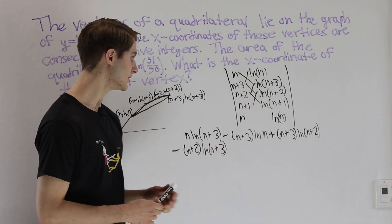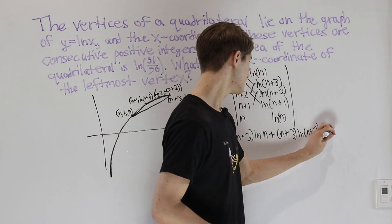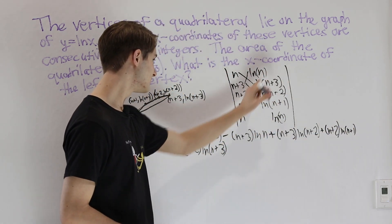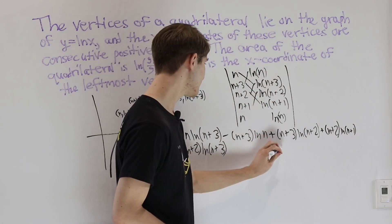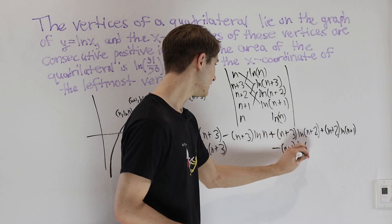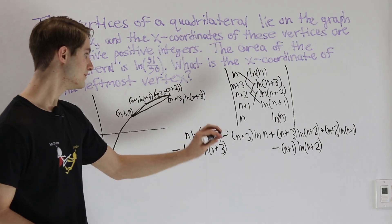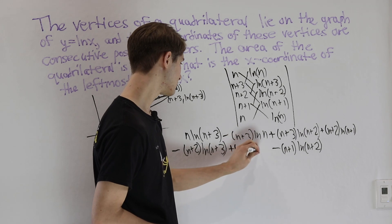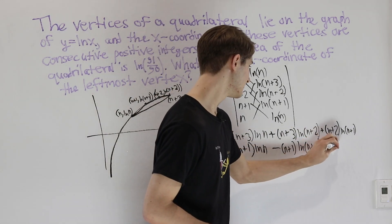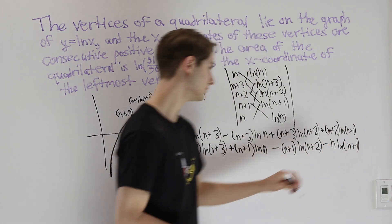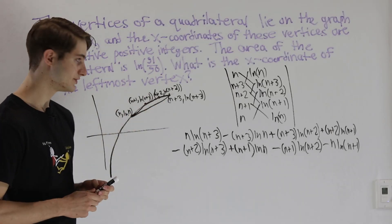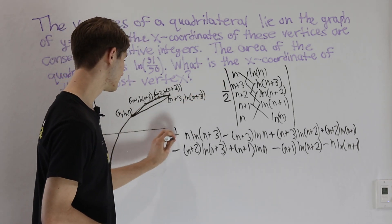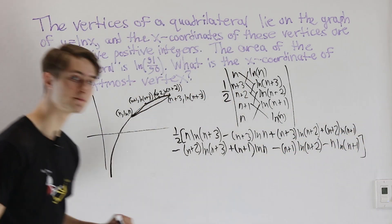Continuing with the next shoelaces: plus (n+2)·ln(n+1) minus (n+1)·ln(n+2). And then one more set: plus (n+1)·ln(n) minus n·ln(n+1). The final step is that the area equals one-half of everything we just wrote out — one-half times the entire sum of those cross-products. That gives us the area of the quadrilateral.